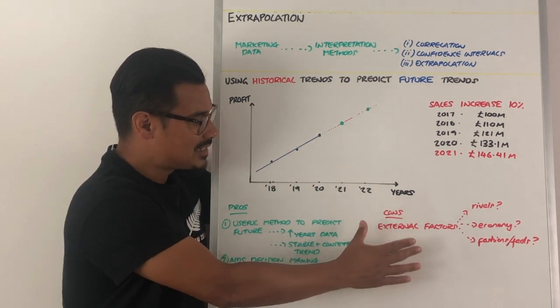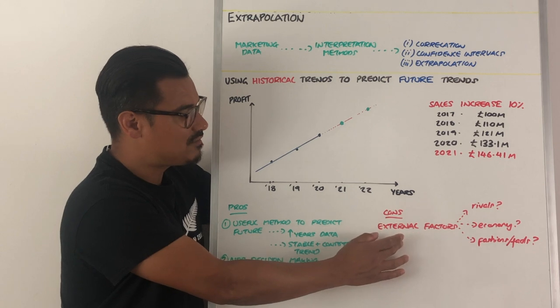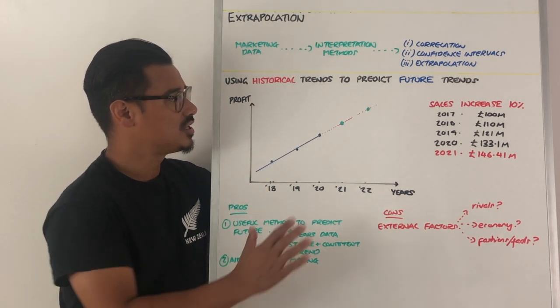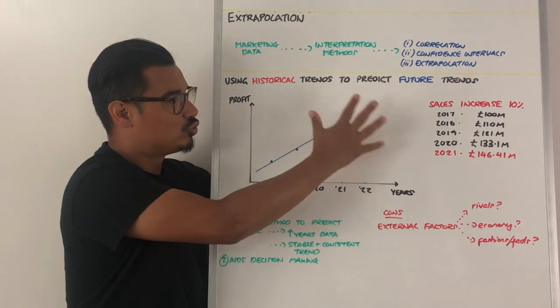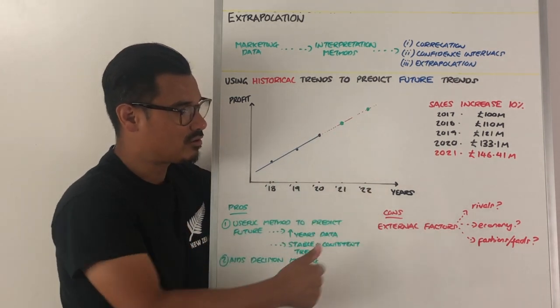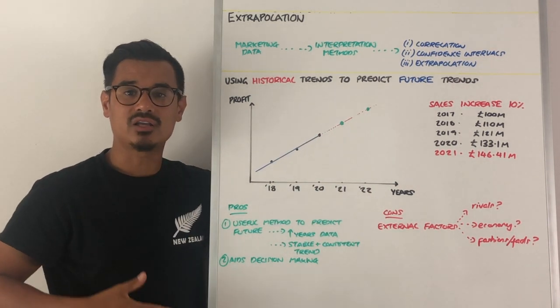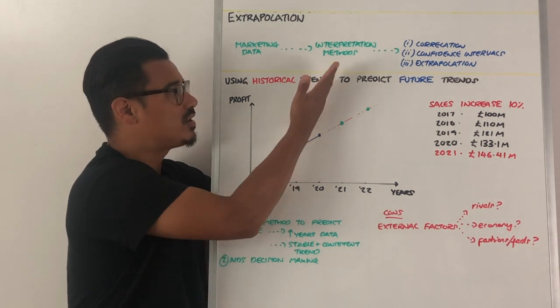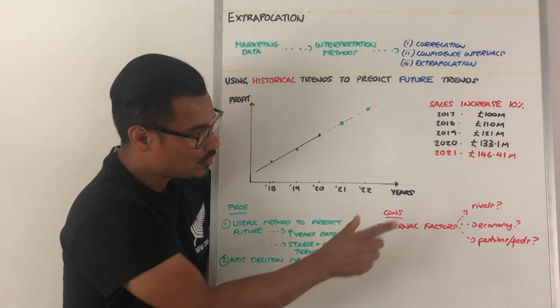However, there are always limitations. The cons here: you must be thinking about external factors when doing extrapolations, because other things could happen that could ruin this trend. You could be thinking about rivals entering or leaving the market. Maybe the trend is actually even steeper.